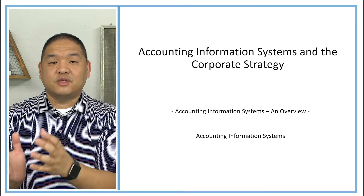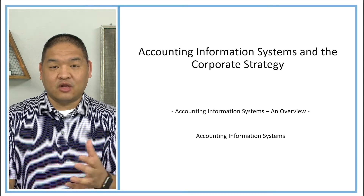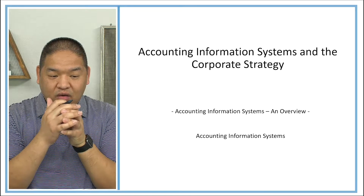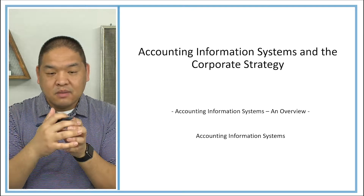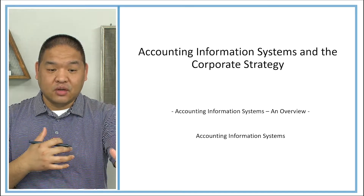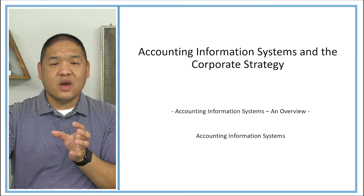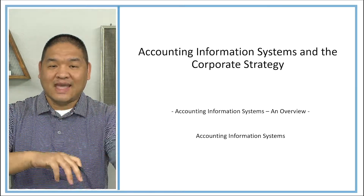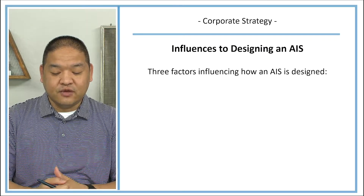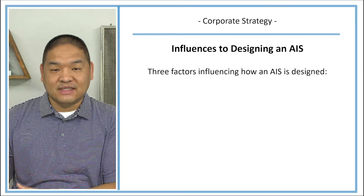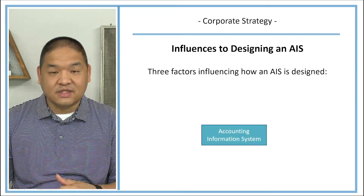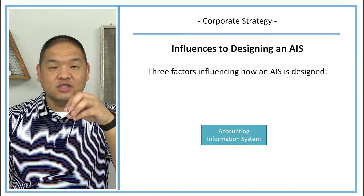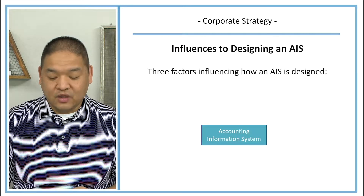In this lesson we're going to talk about corporate strategy and how AIS is influenced by the corporate strategy that an organization has. Corporate strategy is management's roadmap to achieving organizational goals. There are three factors influencing how an accounting information system is designed to support the corporate strategy of the organization.